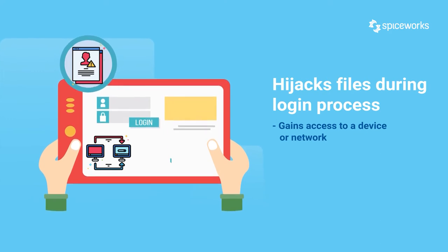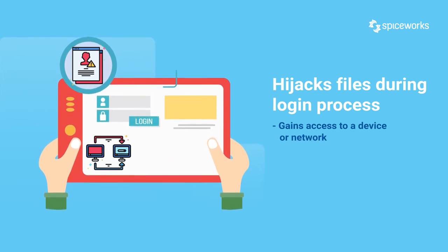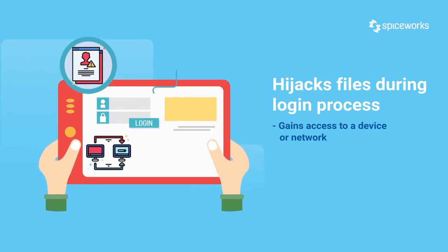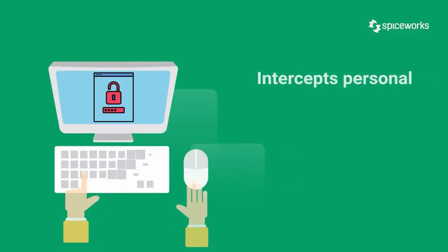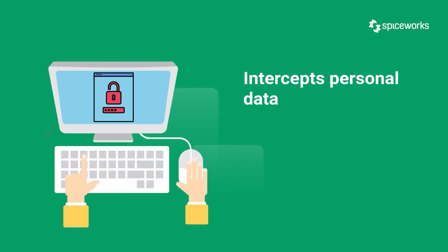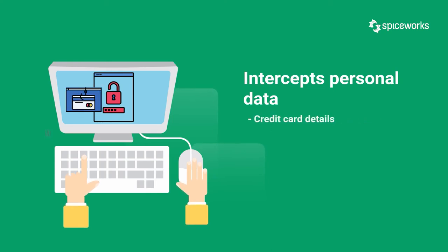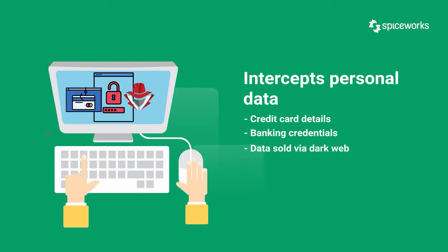Second, it hijacks files. Rootkits gain access to a system, device, or network by exploiting a backdoor, which might occur during the login process or due to safety or operating system software flaws. Once inside, the rootkit can run software that takes or deletes files without the user's knowledge. Rootkits frequently employ keyloggers which record keystrokes without the user's knowledge, and may send phishing emails that install further rootkits. The rootkit extracts sensitive and personally identifiable information including credit card details or banking credentials, which may later be sold to cyber criminals via the dark web.